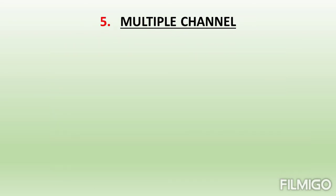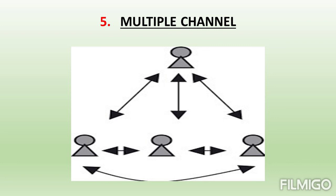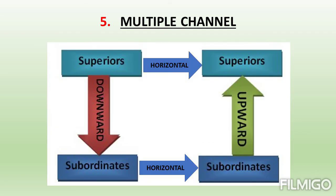Number five, multiple channel. Communication can be formal or informal. The formal ones are more official types. It may flow from a higher level of authority or vice versa, or may be at the same level. We call this downward, upward or horizontal communication.